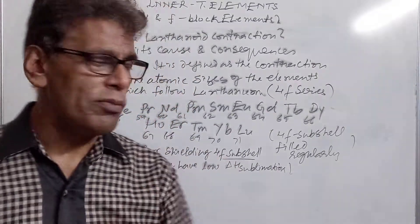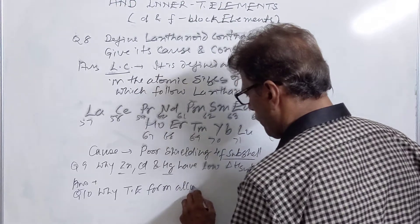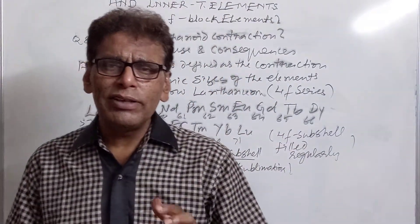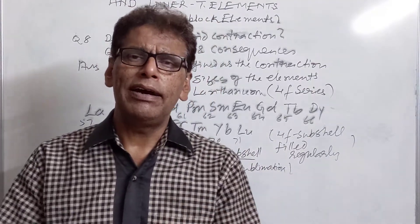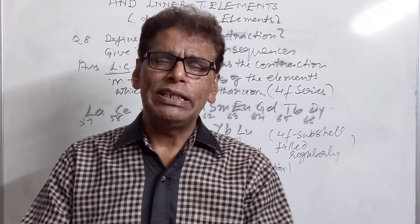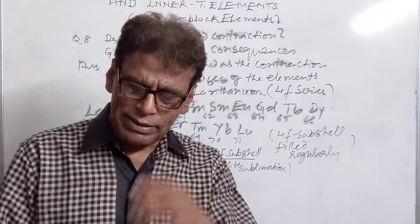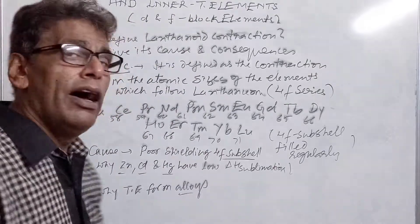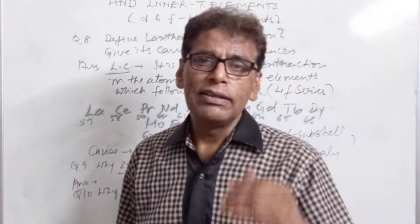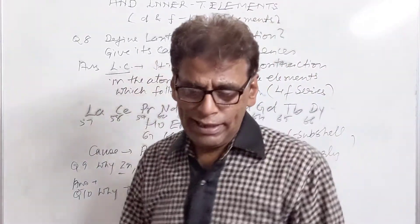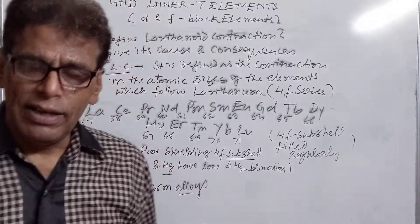Question number 10: why do transition elements form alloys? The answer is due to their similar atomic sizes. Atoms of one element can easily fit into the lattice of another element. When two transition elements are melted and mixed, their atoms easily rearrange among themselves, keeping a stable combined lattice. The resulting alloys have better quality than pure elements and are largely used in commercial industry. Thank you very much.